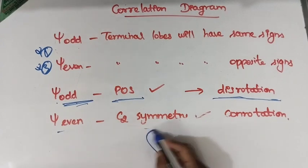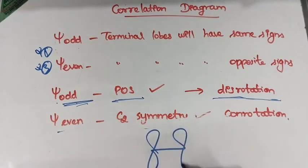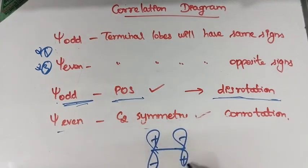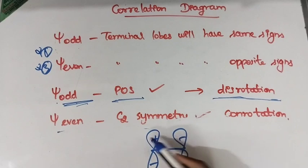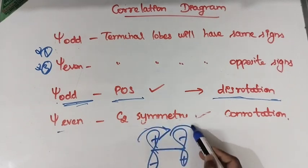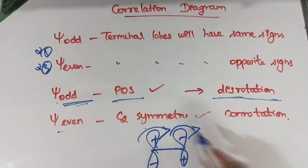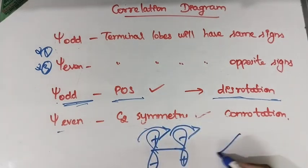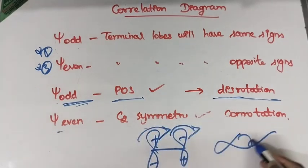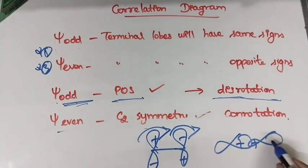Similarly, if psi is even — with opposite terminal lobe signs — it will undergo conrotation. Both lobes move in the same direction, bringing like-signed lobes together so that a bond can be formed.